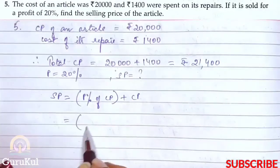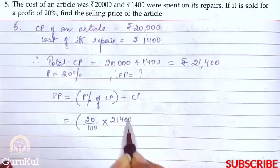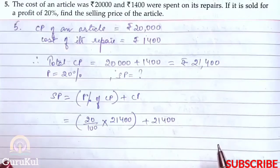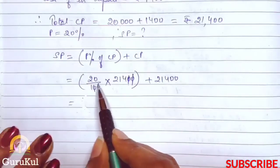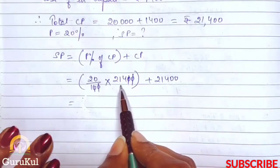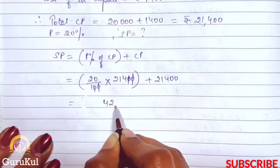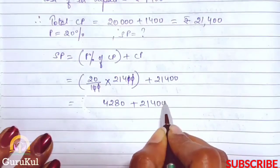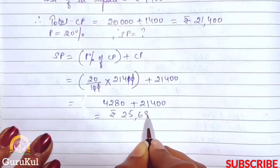So that is: profit percent = 20/100 into 21,400, bracket closed, plus 21,400. Now, 20 into 214 gives us 4,280, plus 21,400, that gives us the amount rupees 25,680.